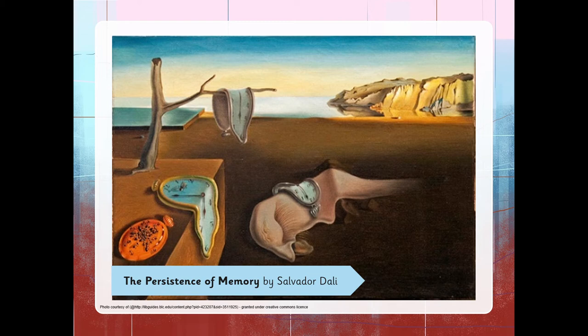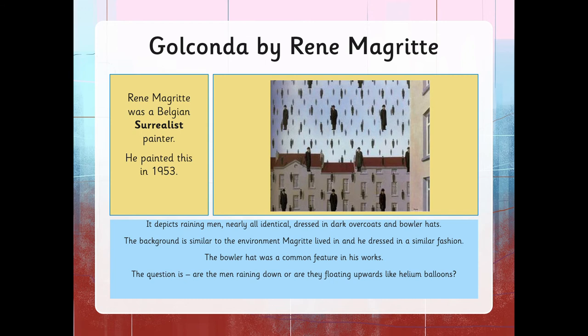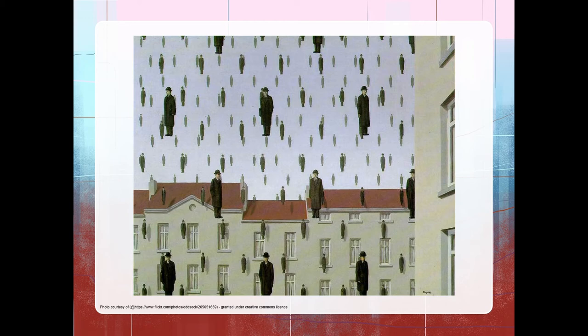What's going on here? This painting is called Golconda by René Magritte. René Magritte was a Belgian surrealist painter. He painted this in 1953. It depicts reigning men, nearly all identical, dressed in dark overcoats and bowler hats. The background, the houses with the red roofs, is very similar to the environment Magritte lived in and he dressed in a similar fashion. The bowler hat was a common feature in his work. The question is, are the men raining down or are they floating upwards like helium balloons? What do you think? One of the most fascinating things about this painting is if you look closely at the men's faces, they are all different.